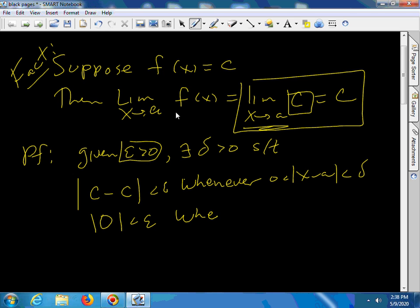This is true, whenever zero is less than this, absolute value of zero is zero, zero is less than epsilon, for any delta bigger than zero. We can pick any delta. It'll work.